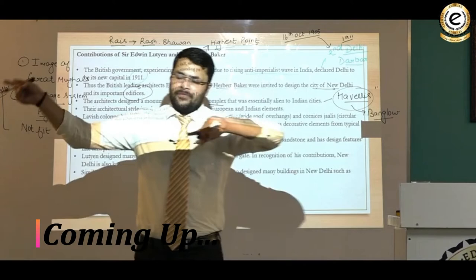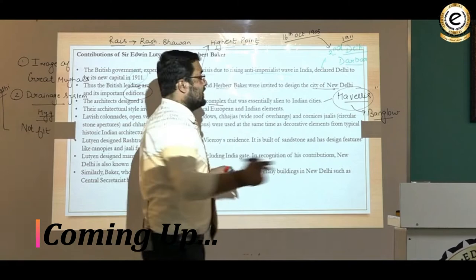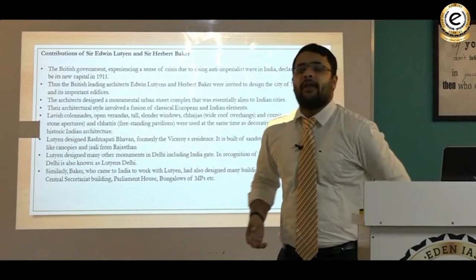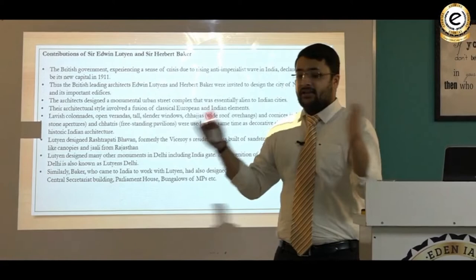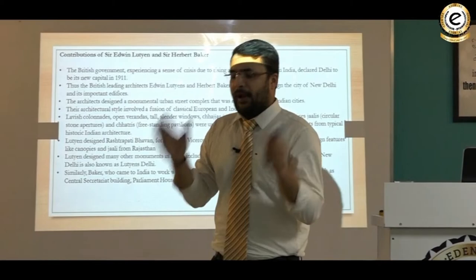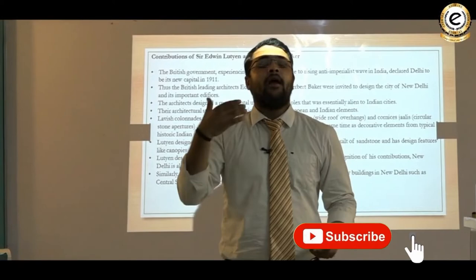The civil lines area and model town represent hygienic bungalows constructed during the colonial period. According to the colonials, old Delhi — the Chandni Chowk area — is very much congested and not paying attention to the kind of hygiene which should be there. That is why they were very much fond of proper planning and airy structures.